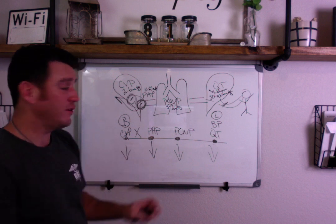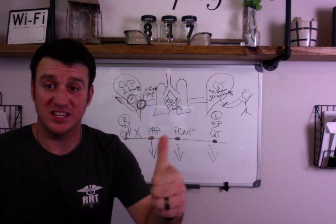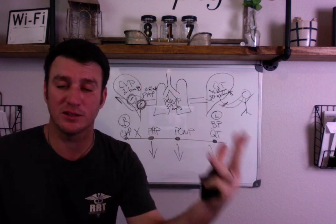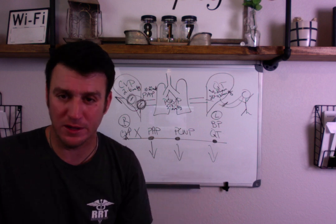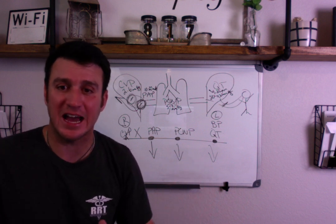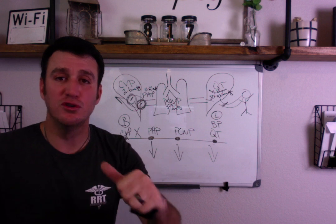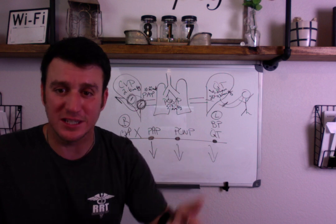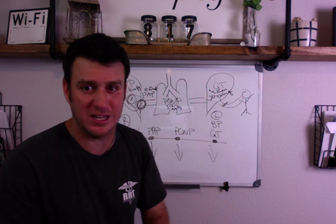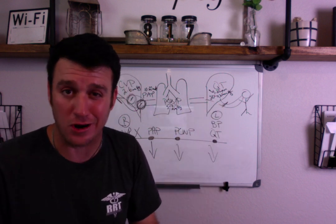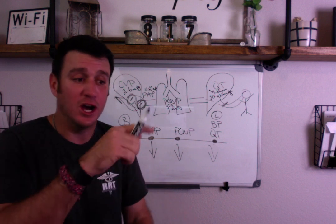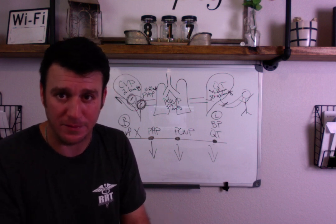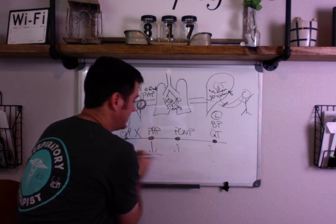If all of your numbers are down — CVP, pulmonary artery pressure, pulmonary capillary wedge pressure, and systemic blood pressure all down — then you're probably looking at hypovolemia, meaning you don't have enough fluid in your circulatory system. Your whole pressure goes down, just like in a closed system pump: if you lose fluid, pressure will go down.